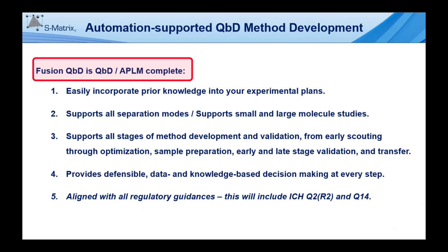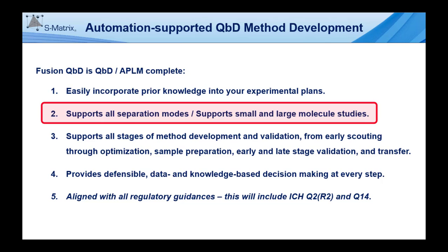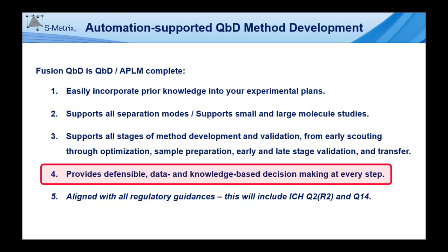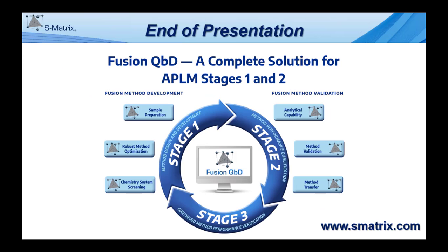As this presentation has shown, Fusion QBD is QBD APLM complete. It lets you easily incorporate prior knowledge into your experiment plans, supports all separation modes, and supports small and large molecule studies. It supports all stages of method development and validation from early scouting through optimization, sample preparation, early and late stage validation, and method transfer. It provides defensible data and knowledge-based decision making at every step, and it is aligned with all regulatory guidances, including ICH Q2R2 and Q14. That ends this introduction to S-Matrix and our Fusion QBD software platform. Thank you for watching.